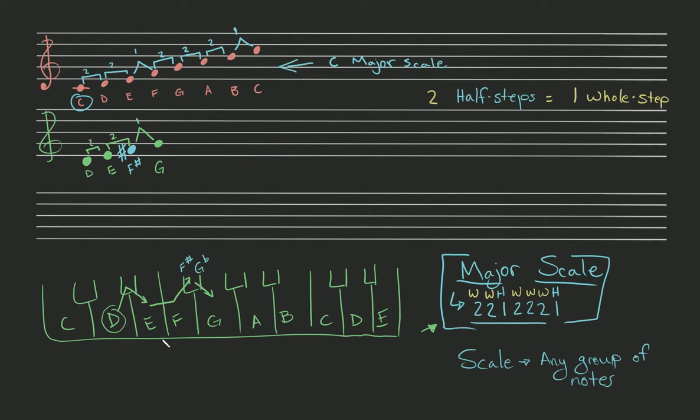These are called - here's a new vocabulary word - enharmonic notes. F sharp and G flat, for example, are called enharmonic notes. This is what they're called when you have two notes that are the same. Like B sharp and C - those are enharmonic notes with each other.